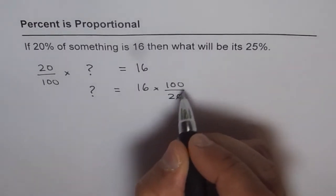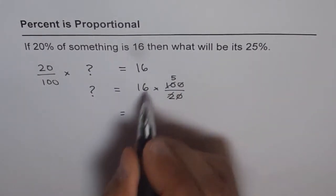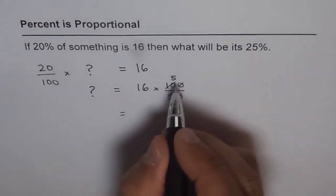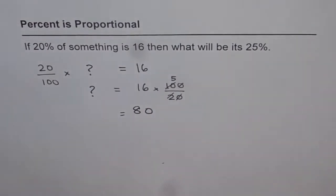So, 100 over 20 is 5. And 5 times 16 is, 6 times 5 is 30, 5 times 1 is 5, and 3 is 8, is 80.